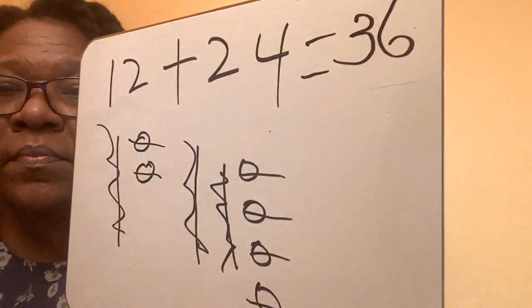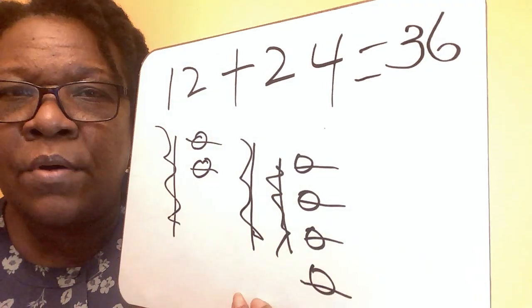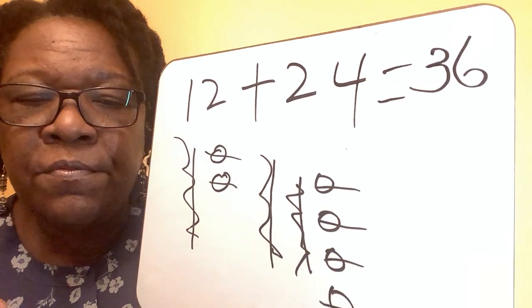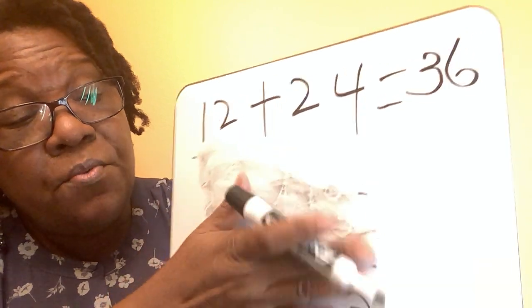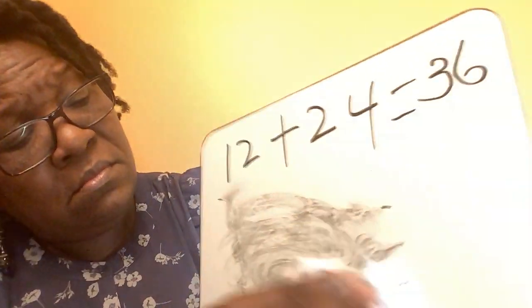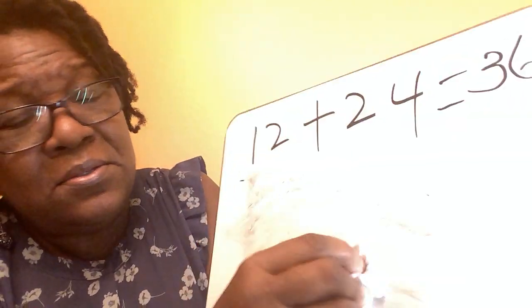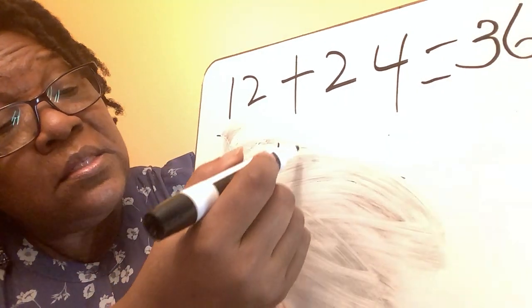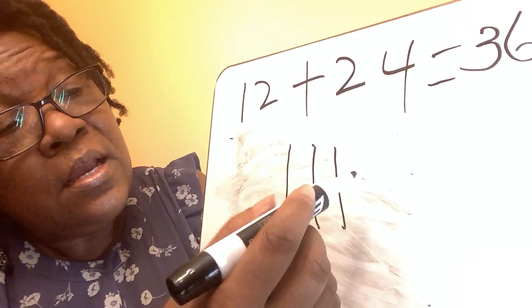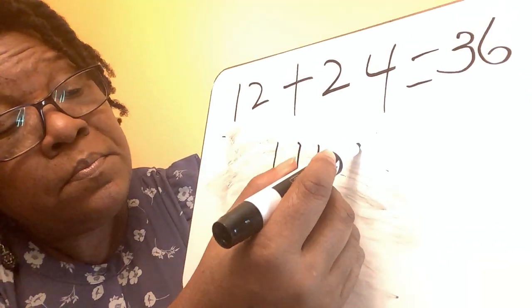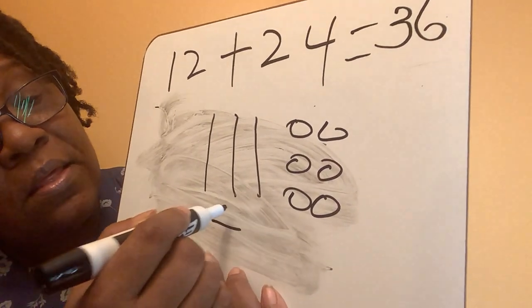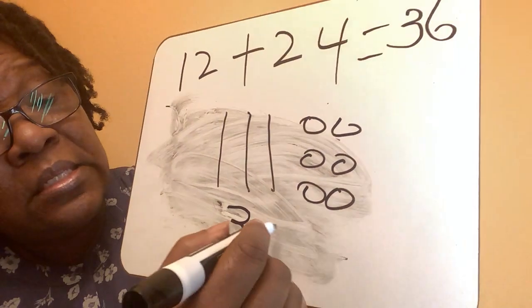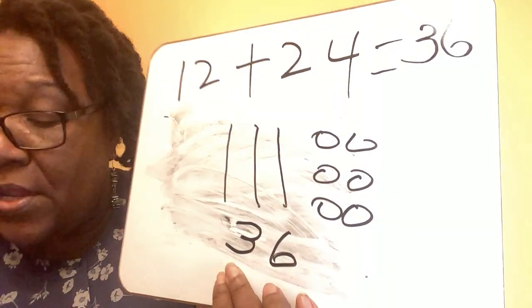Equals 36. I teach them to cross it off so they get used to crossing off. When they get very comfortable they don't have to cross it off — they could just count it. There's another way you can do this: when they write their tens, you could ask how many tens they see — they see three — and then how many ones they see — they see six. So that's another way to do it using tens and ones.